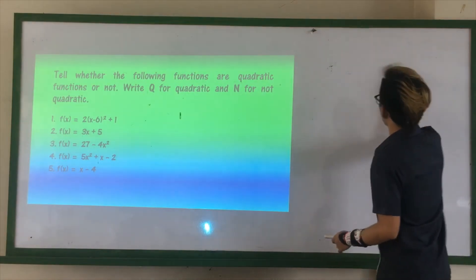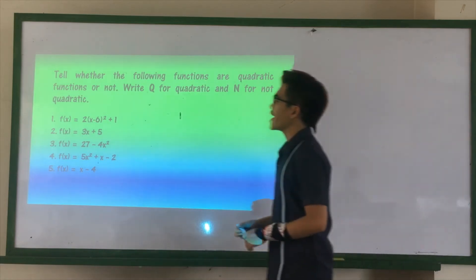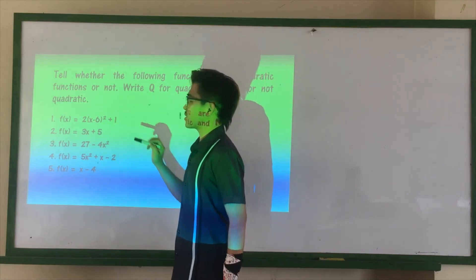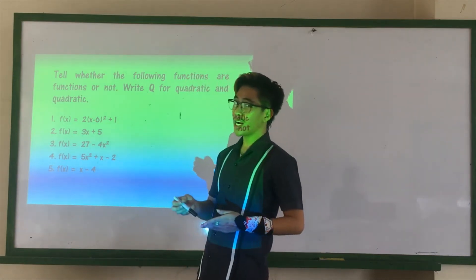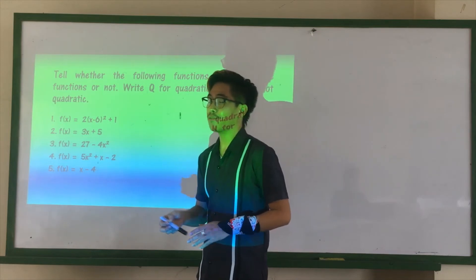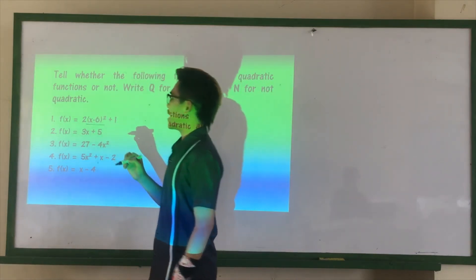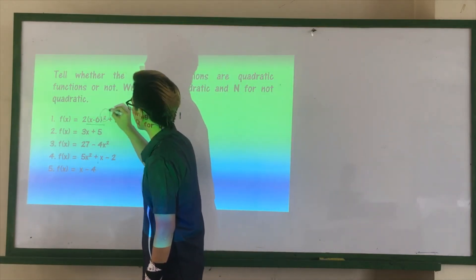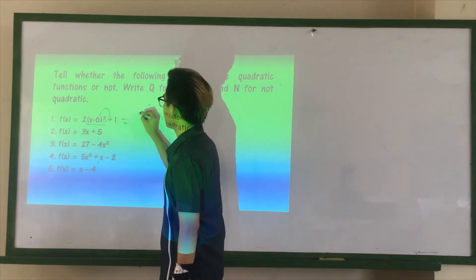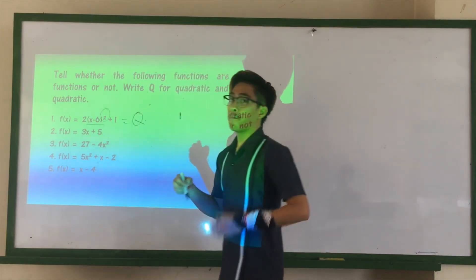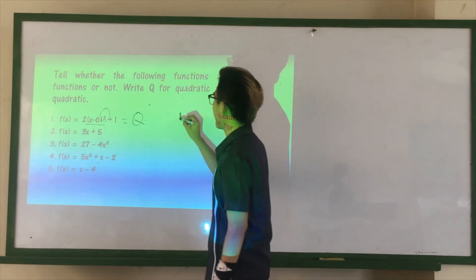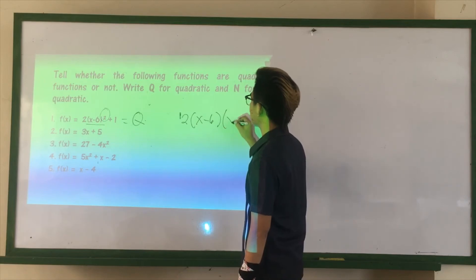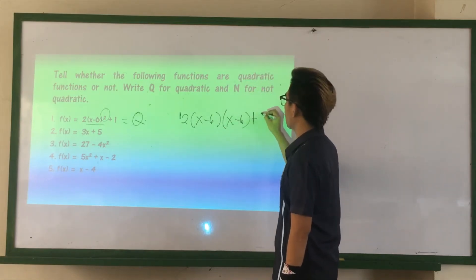For the first function, we have 2 times (x minus 6) raised to the power of 2, plus 1. Remember, using its standard form, this part is already a quadratic function because the exponent is 2. But to solve and show more detail, we expand: 2 times (x minus 6) times (x minus 6) plus 1.